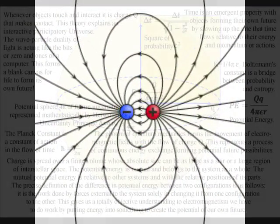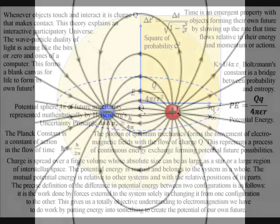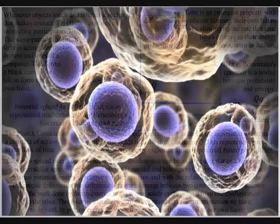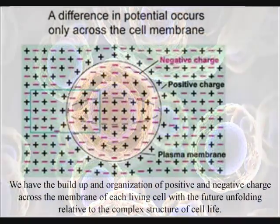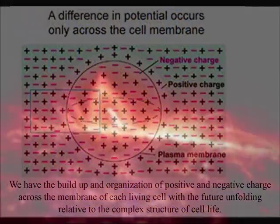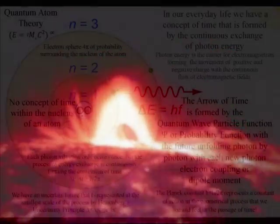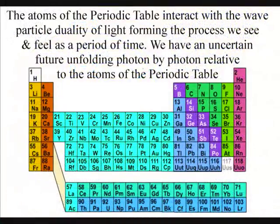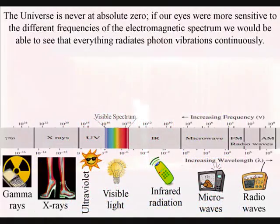Because charge is an innate part of all matter, this can represent a universal process from the cells within us to the stars above us, with an emergent uncertain future unfolding photon by photon relative to the atoms of the periodic table and the wavelength of light.